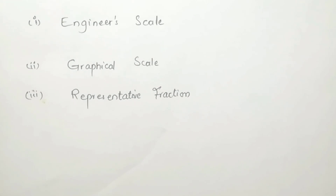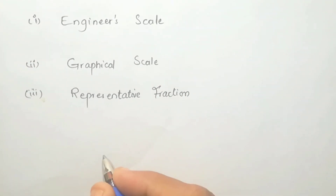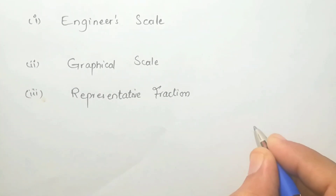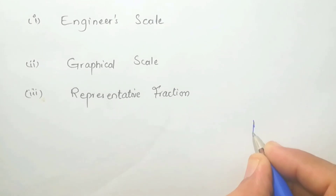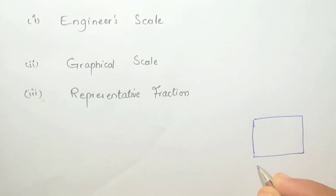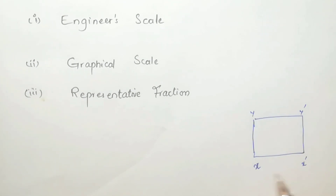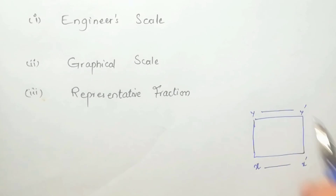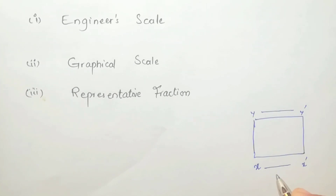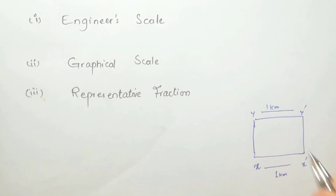First of all, we have an object. For example, this is an object with length x-x' and width y-y'. This width y-y' is one kilometer. Because I have a limited sheet space, one kilometer is a large unit, so I need to use an Engineer's Scale to represent it.